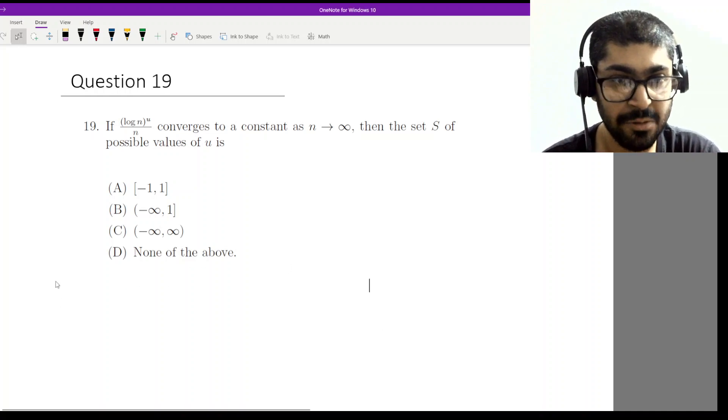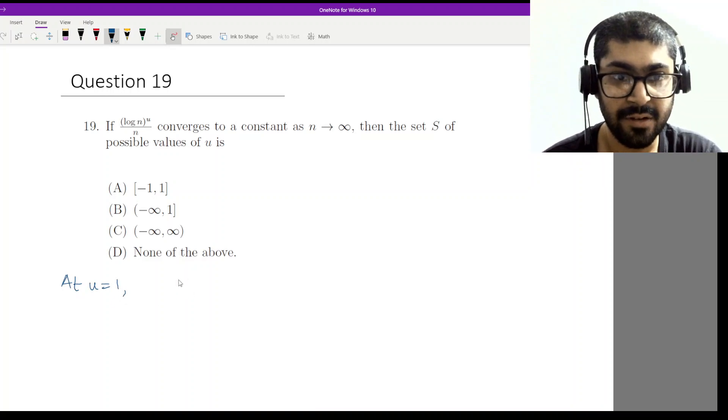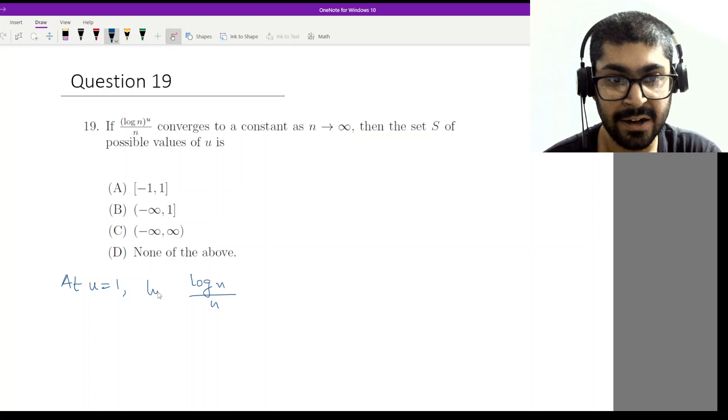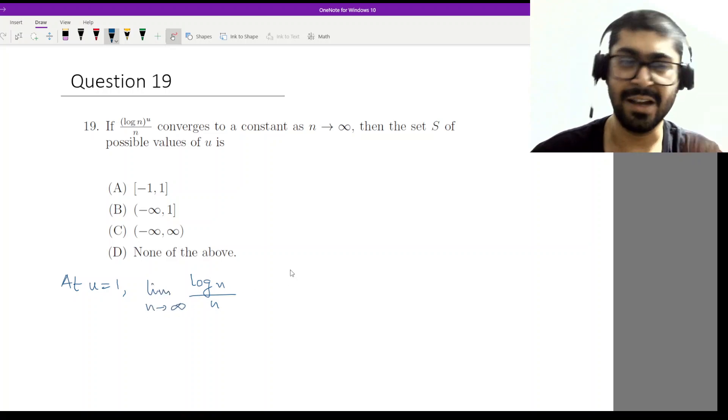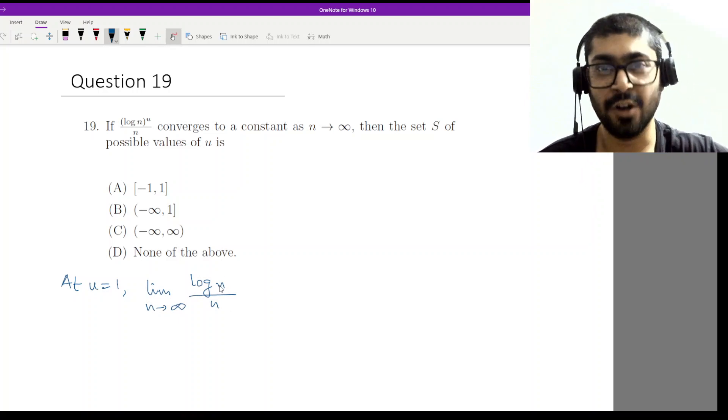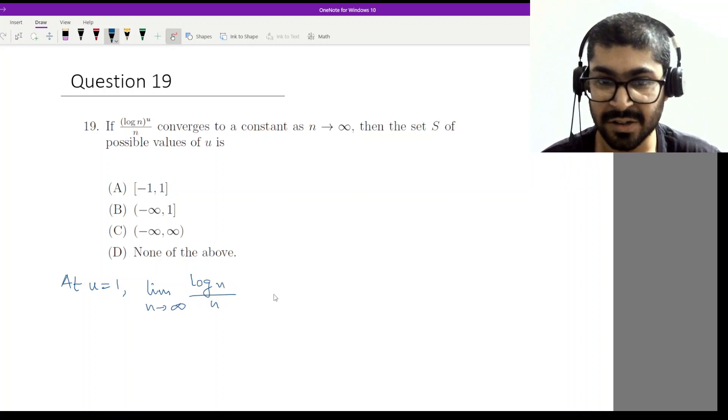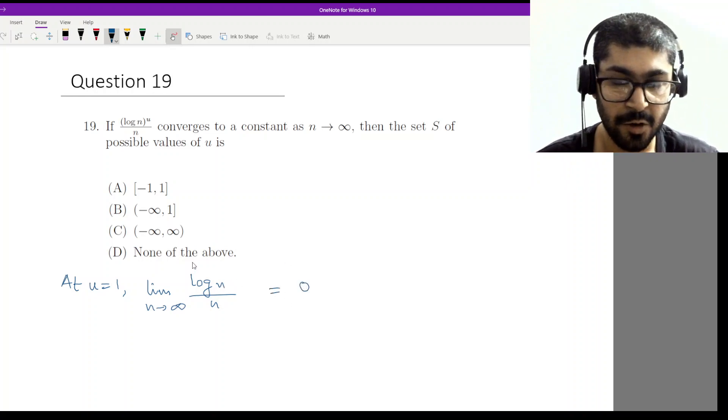At u equal to one, we have log n by n and limit n tends to infinity. Now this is very clear to you all. As n increases, log n will increase, but at a much slower pace than n. So this one will be zero.